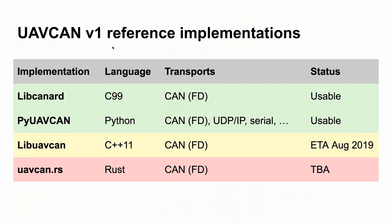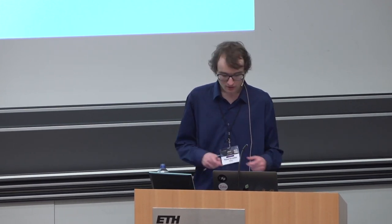At the moment Rust is in its early days for safety-critical use. There is an effort called Sealed Rust whose objective is to provide a certified and validated Rust compiler implementation, making the language usable in safety-critical systems on par with Ada or C. We want to be on board with that, as it has the potential to significantly displace C from certain safety-critical domains.